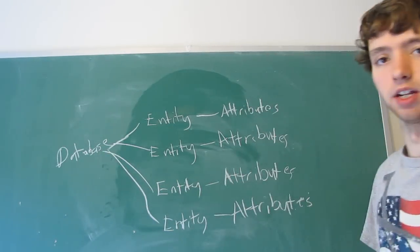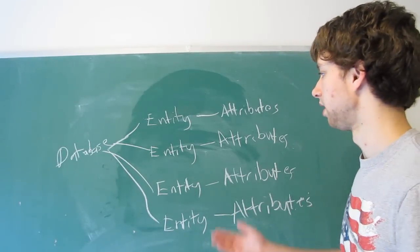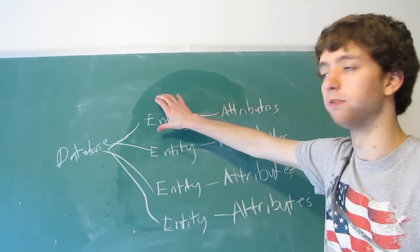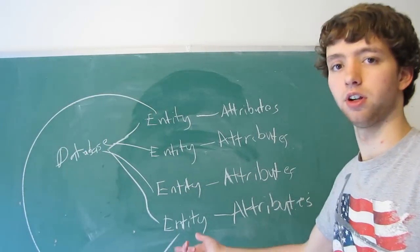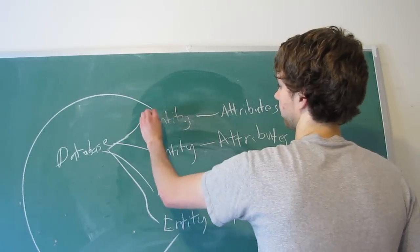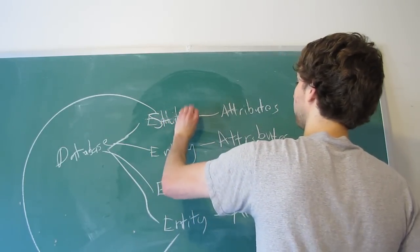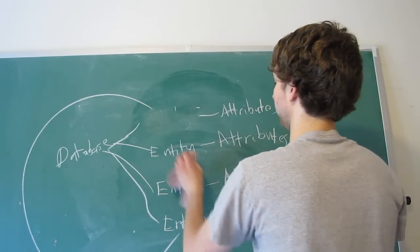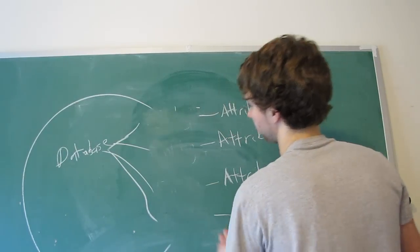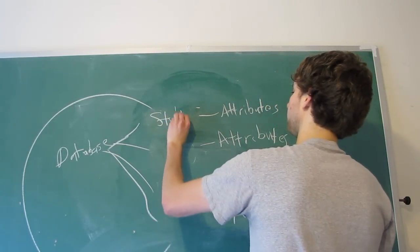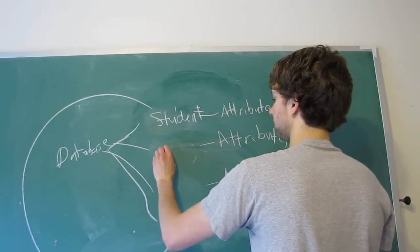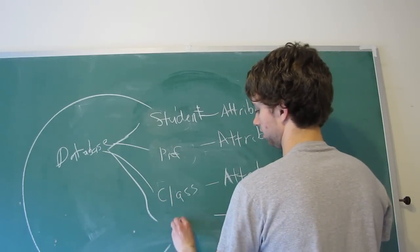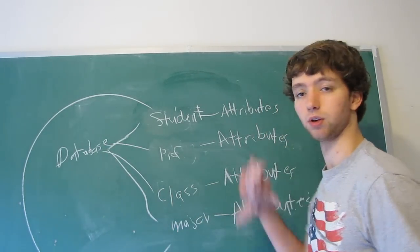That will become part of our database structure. Well, these are still related in some way because we have a student. So let's replace these with specific examples. We could have a student, we could have a professor, and then we could have class, and then we could have major.